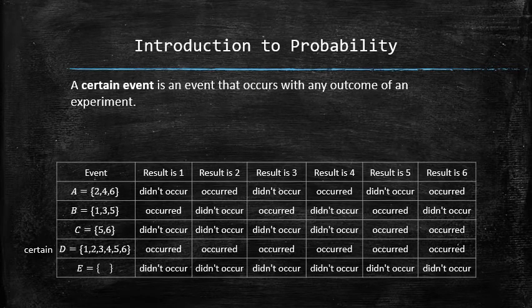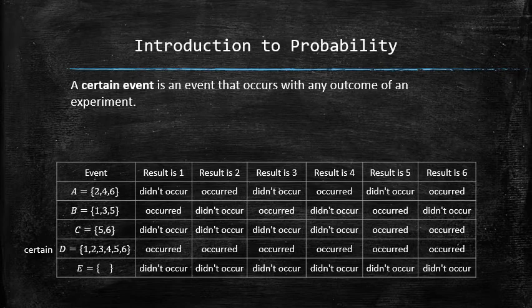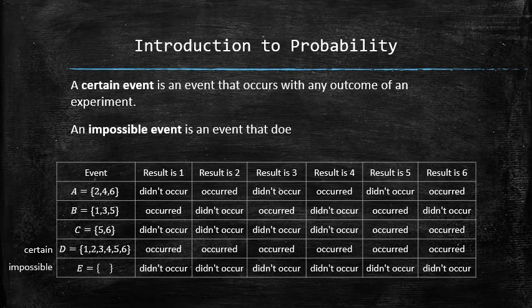Now, take a look at event E, which is the empty set. Again, as strange as it may look, event E also satisfies the definition of an event and therefore has to be treated as such. Since E occurs for no outcome of the experiment, we call E an impossible event.